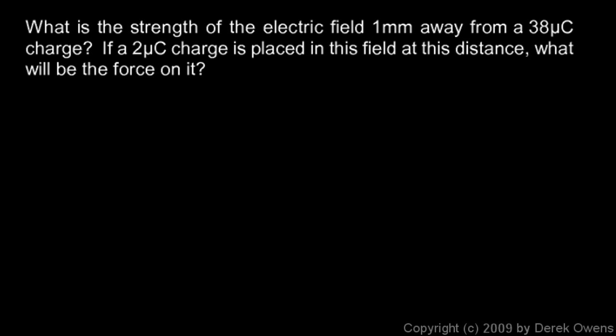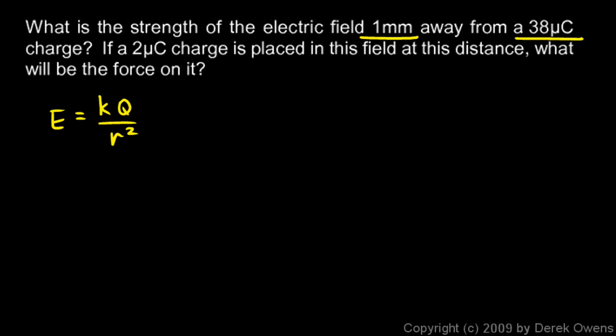In this problem, we are asked: what is the strength of the electric field one millimeter away from a 38 microcoulomb charge? And then we're asked, if a 2 microcoulomb charge is placed in this field at this distance, what will be the force on it? We can find the strength of the electric field around a charge with this equation: E = kq over r squared. This gives us the electric field intensity E at a distance r from charge q. So we want to find the electric field intensity at a distance of 1 millimeter.